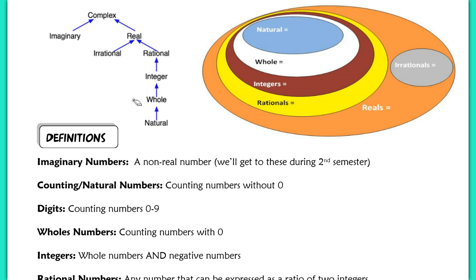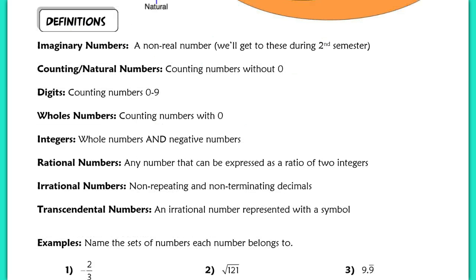First up, we have imaginary numbers. These are numbers that are not real numbers — you can't find these on a number line. This is a non-real number that we'll use during second semester when we start solving quadratic equations with non-real solutions. We denote an imaginary number with an i, so 3i or negative 3i are examples of imaginary numbers.